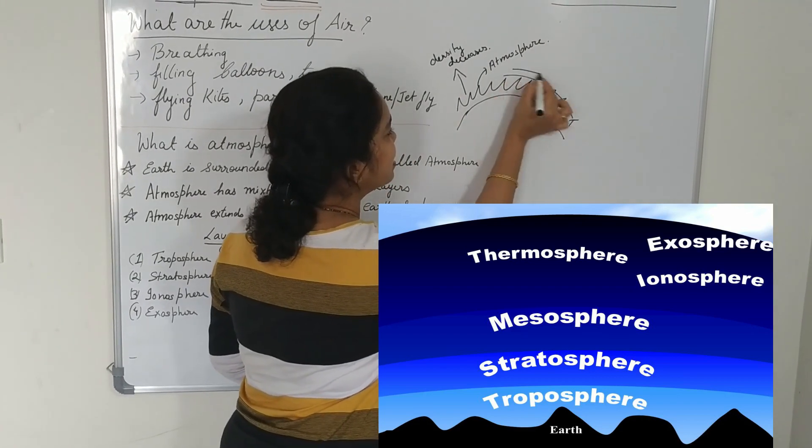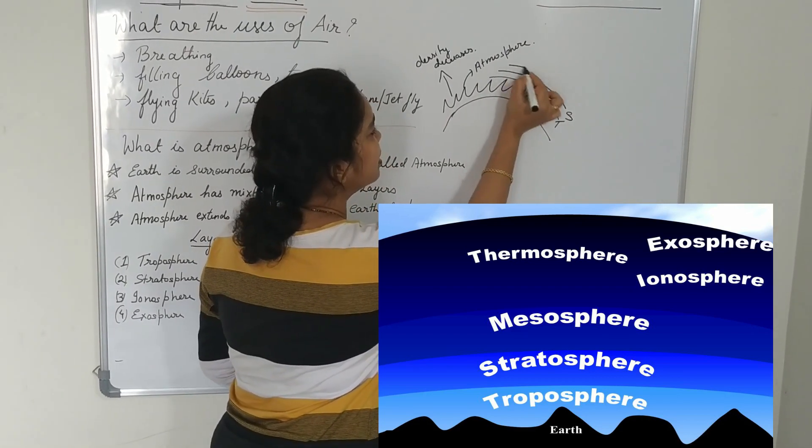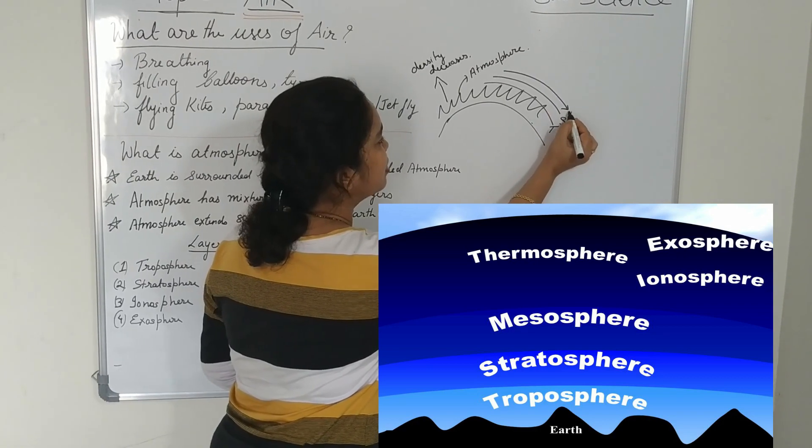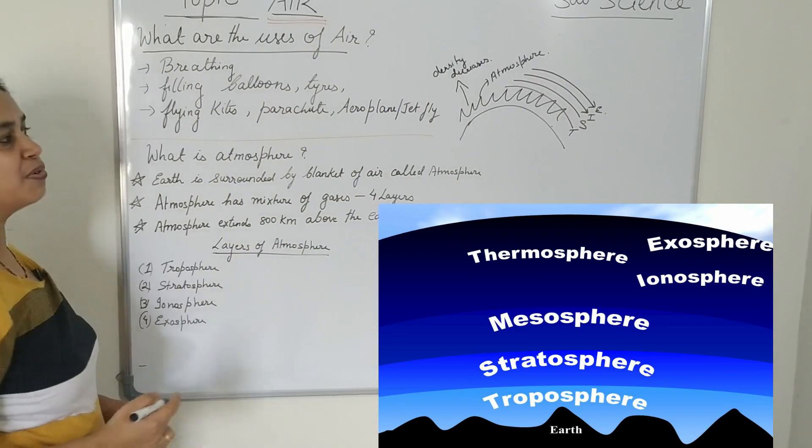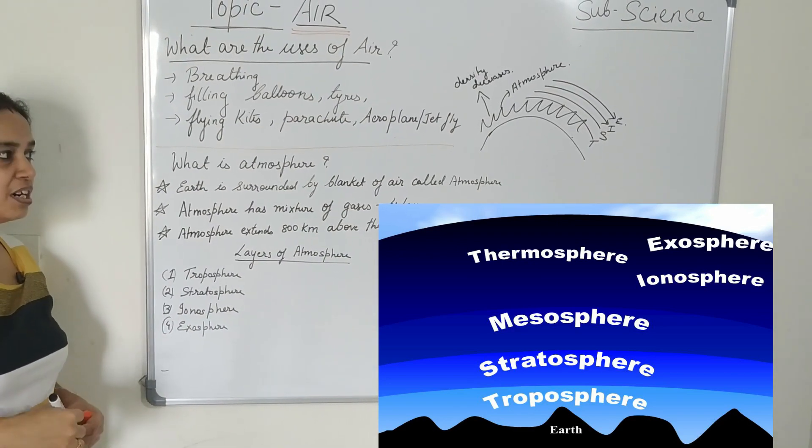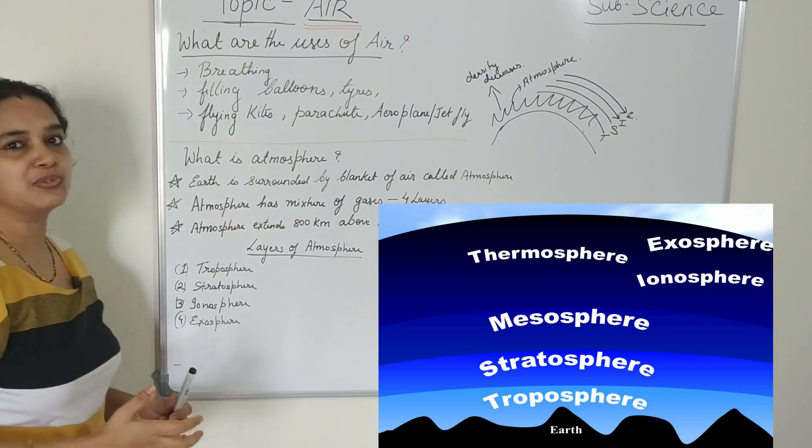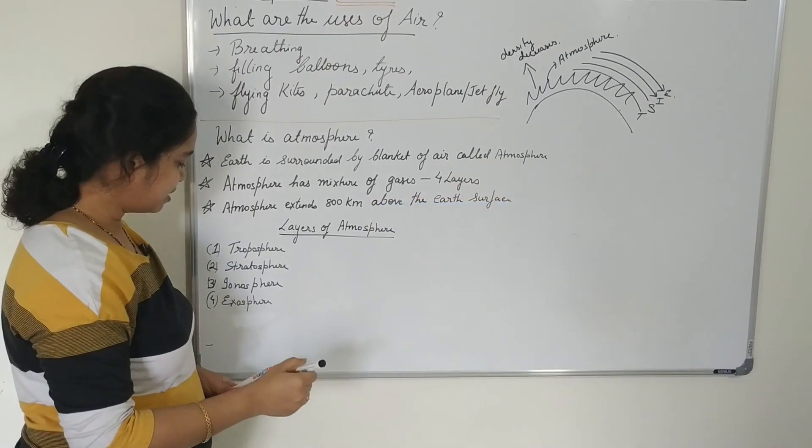First is the troposphere. Second is the stratosphere. Third is the ionosphere. And fourth one is the exosphere. These are the four layers above the earth's surface. And they constitute the atmosphere. So first is the troposphere.